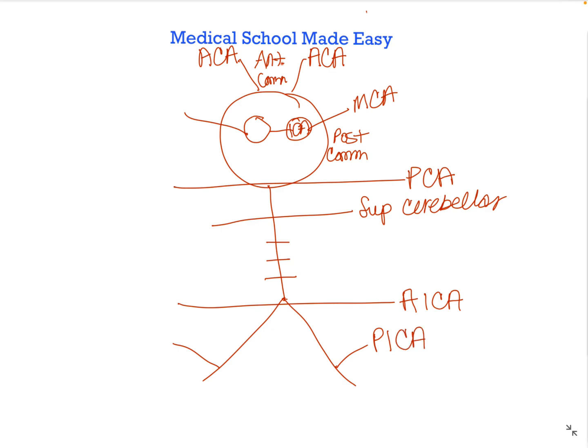We have the AICA and the PICA down here. Coming off those little buttons are the pontine arteries, since we need to give blood to the pons in the brainstem as well. Both the superior cerebellar and the pontine arteries come off the basilar artery — this whole section is the basilar artery. That's another question they really like to test.